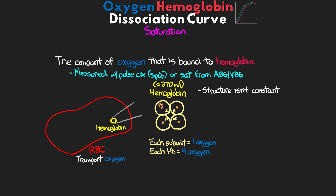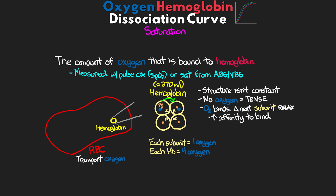The structure of the hemoglobin molecule isn't constant. Its initial stage where it has no oxygen is referred to as tense. Once oxygen binds to the first subunit, it causes a conformational change in the next subunit — something we call relaxed. This change actually increases the affinity, or the attractiveness, for oxygen to bind. When oxygen then binds to that next subunit, it again changes the next one, making it even more relaxed, which further increases the affinity for oxygen. This changing affinity is referred to as cooperativity — as more oxygen is bound, there's a greater affinity to bind with more oxygen.